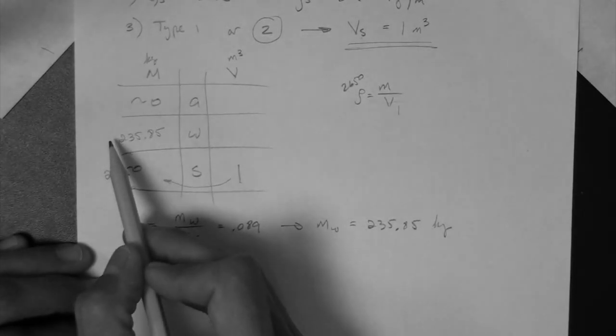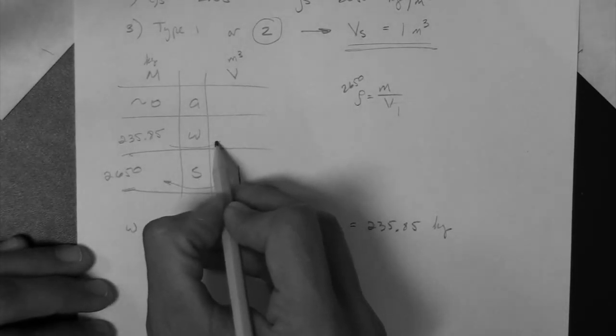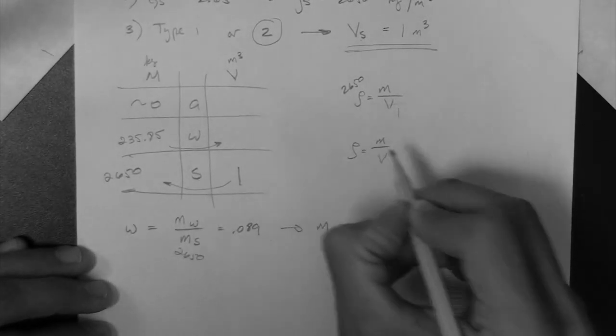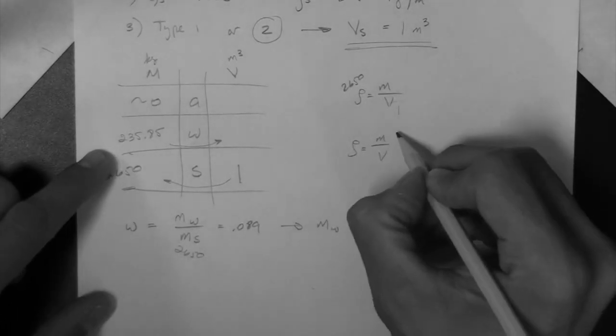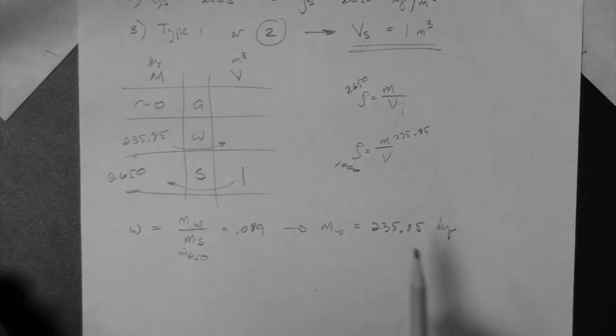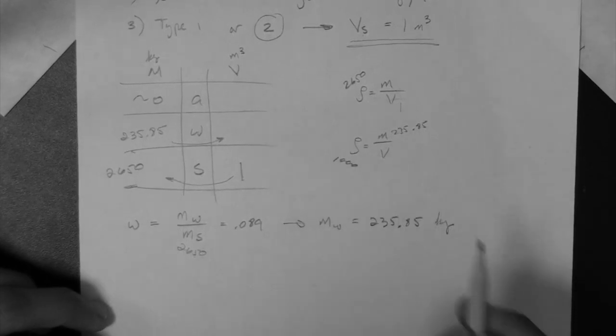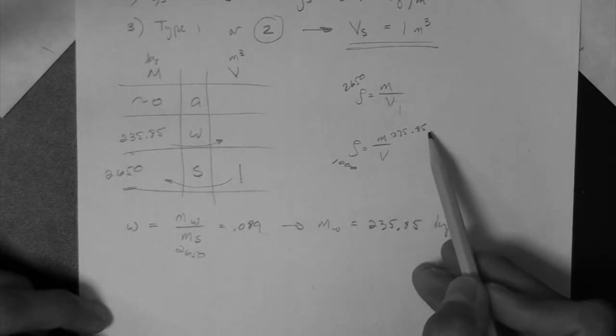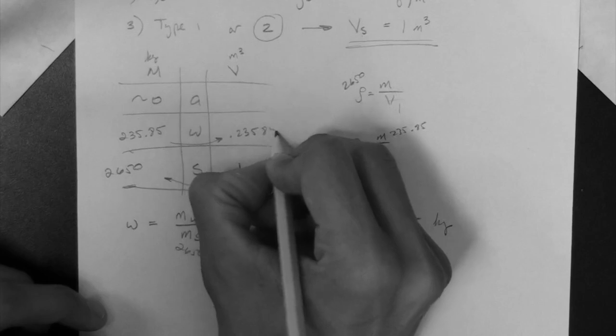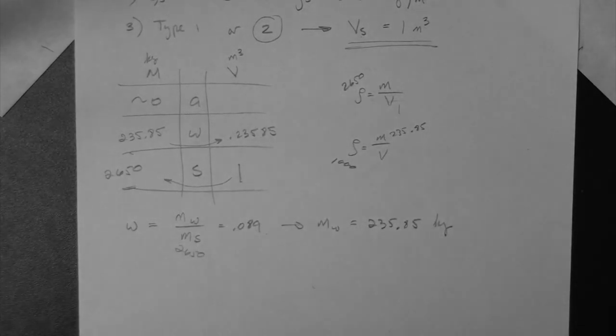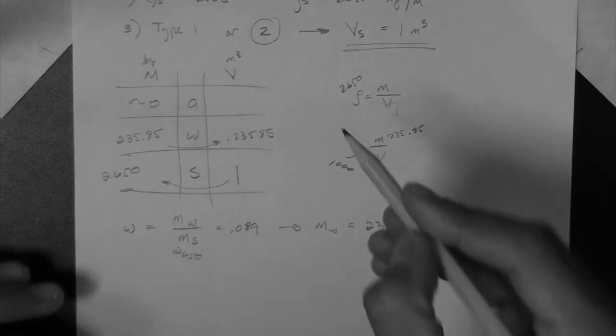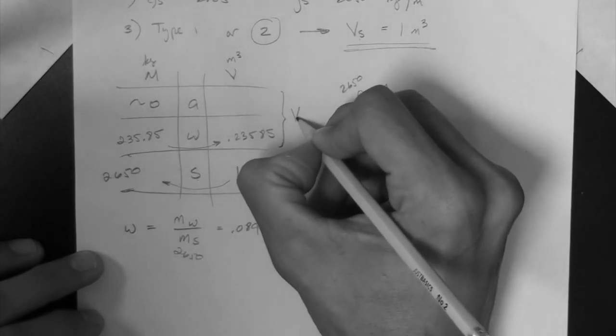Again, we have one value on one side of the W, so we can proceed to the other side, again, with the rho equal mass over volume equation, right? What's the mass of water? 235.85. What's the rho of water? 1,000 kilograms per meter cubed. Therefore, the volume of water is the mass over rho. So 235.85 divided by 1,000 is 0.23585, if you want. Okay? For calculations. Keep these two values. Okay? So that's good. By the way, I forgot here, which we're going to need it later, the volume of voids, obviously.